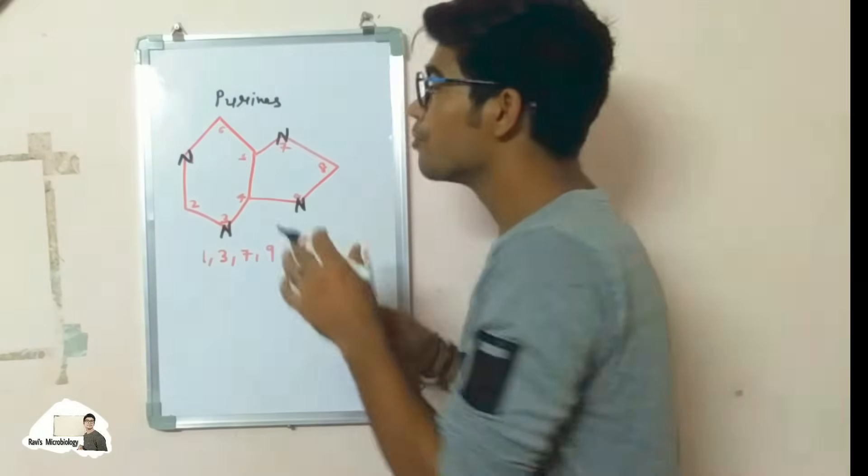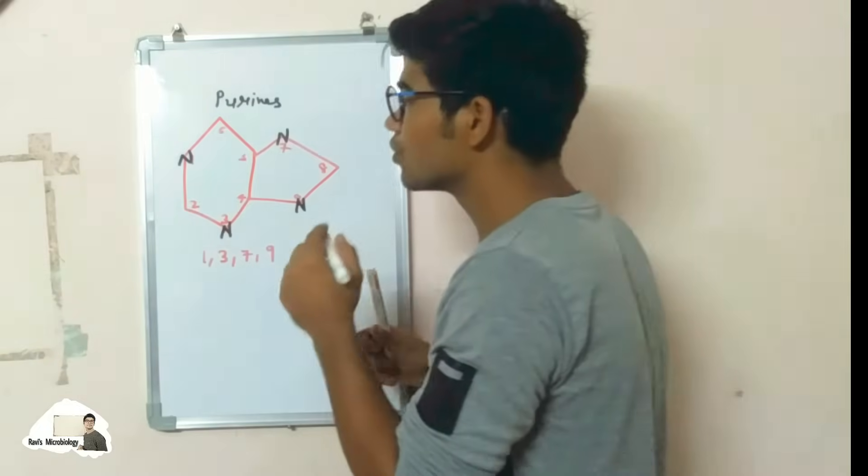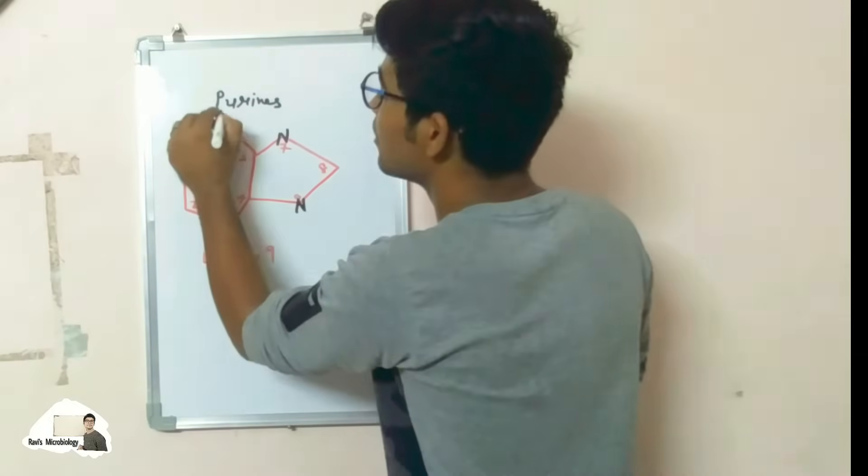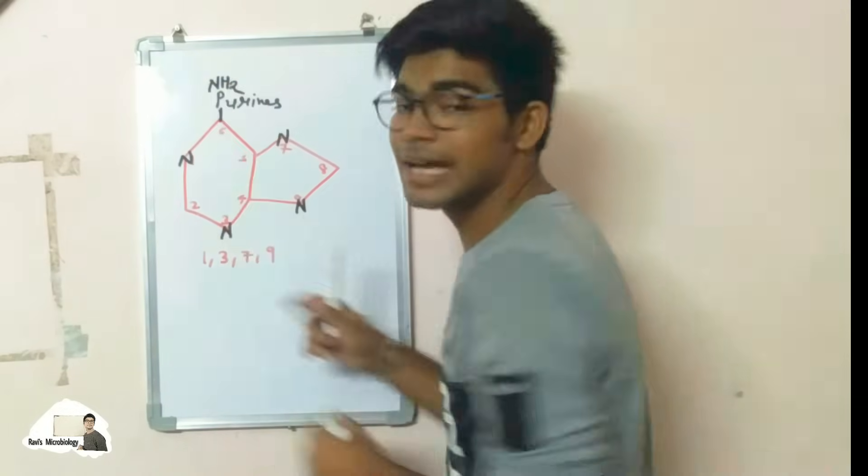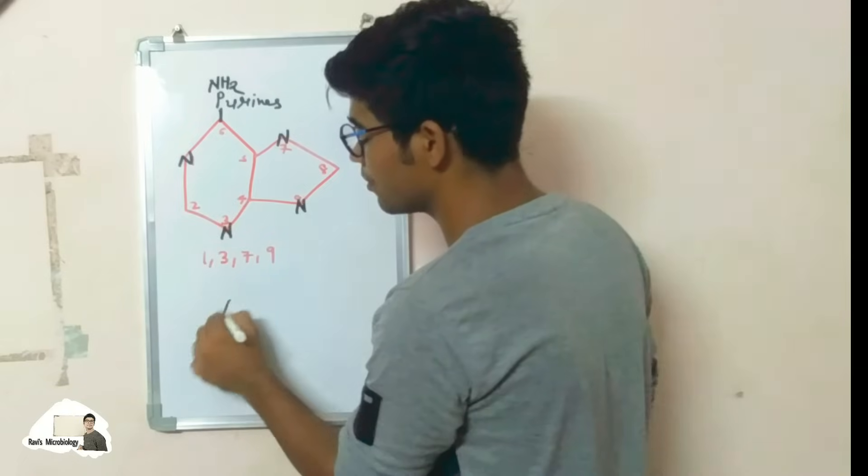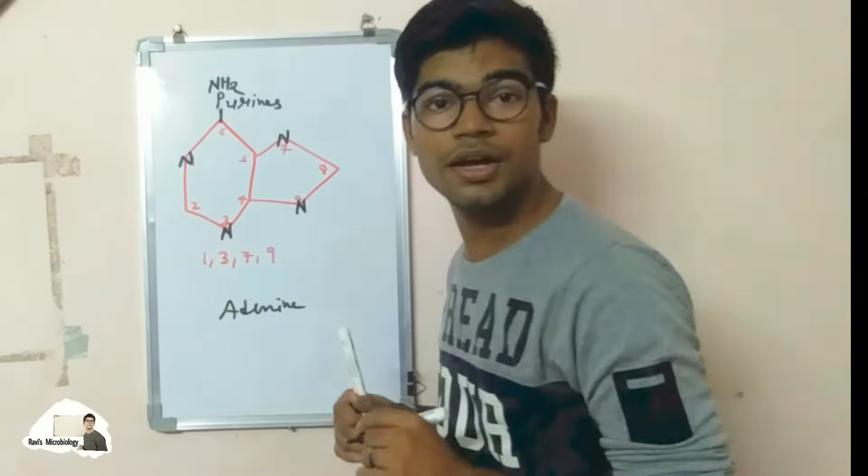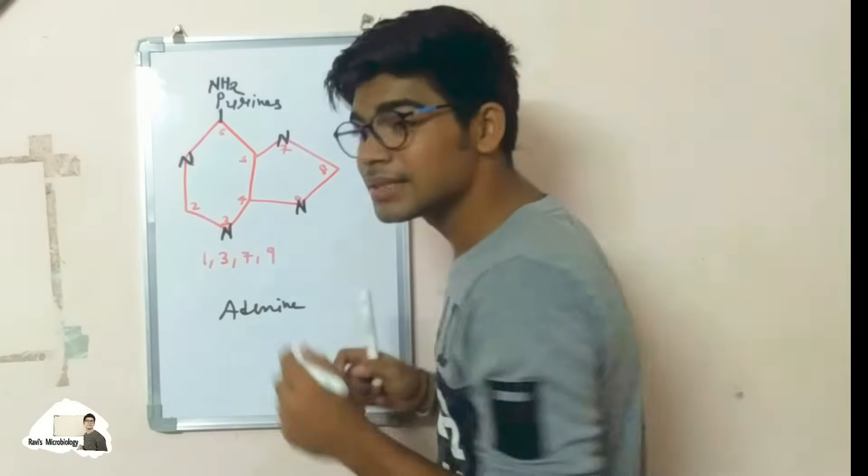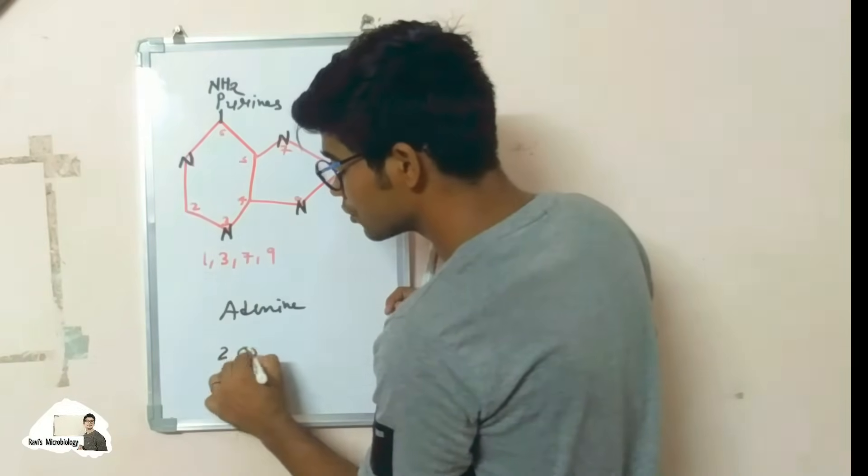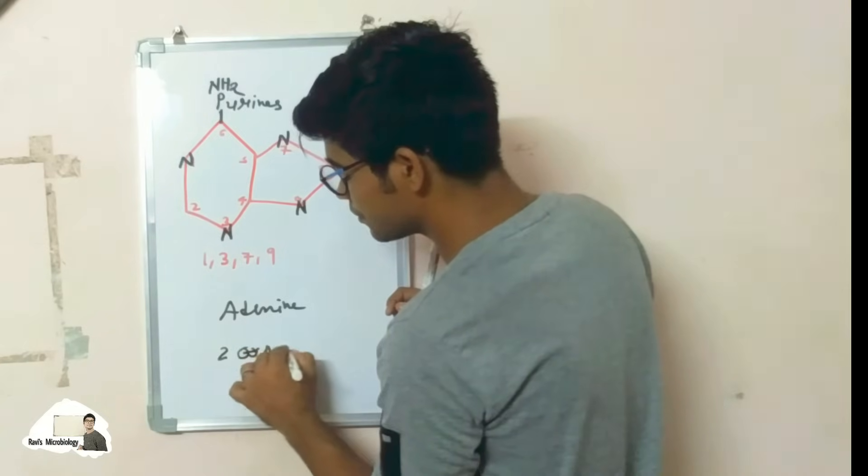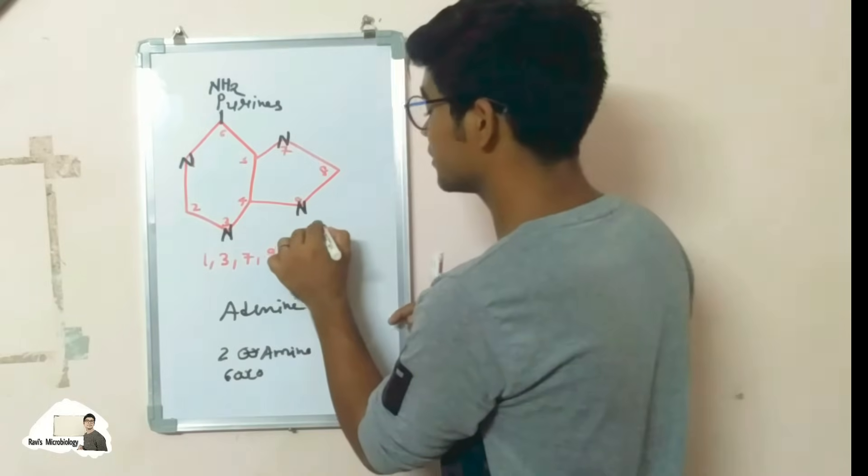Now purine bases are two types: adenine and guanine. So for adenine, place one amino group at six position. So it forms adenine. And for guanine, place at two position an amino group, and at six position an oxo group. So it looks like that.